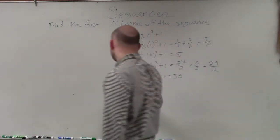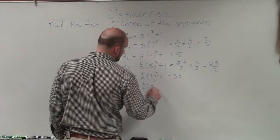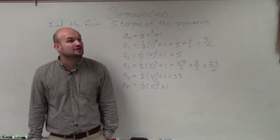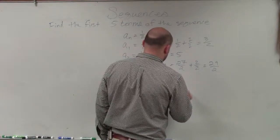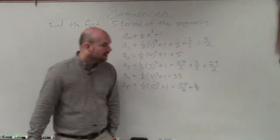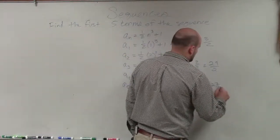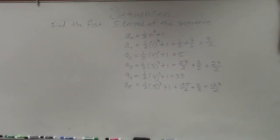And then the last one is a5, which equals 1 half times 5 cubed plus 1. 5 times 5 times 5 is 125. 5 times 1 half would just be 125 over 2 plus 2 over 2. And then that gives me 127 over 2. Does anybody have any questions to at least how to find the first terms?